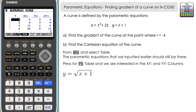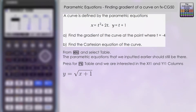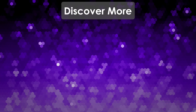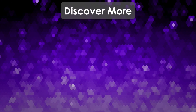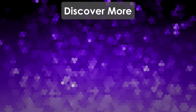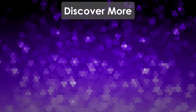So the answer to part b is y equals the square root of x plus 1. That's how we can explore these parametric equations on the FXCG50 — draw a graph, find the derivative and gradient at particular points, and use it to support our algebraic methods when finding the Cartesian equation. Thanks very much for watching and I'll see you next time on the Calculator Guide.